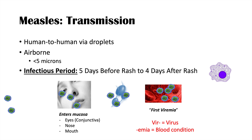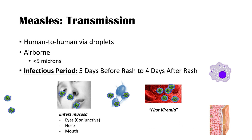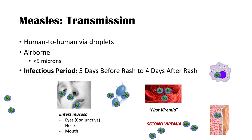The virus then starts to multiply in the blood and spread to other cells, such as macrophages, and can enter into the skin causing infection there. The virus can multiply in these sites and then enter the blood again, causing what we call a second viremia. There's a first viremia, a lull in the viral load, and then a second viremia — and this is when we actually start to see symptoms.